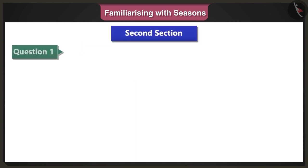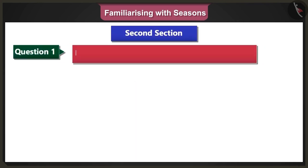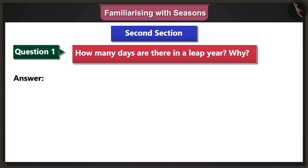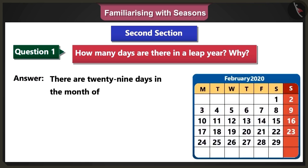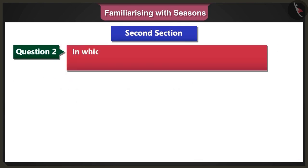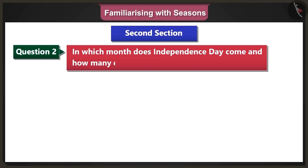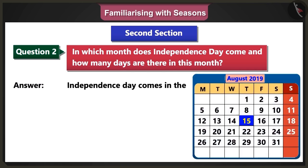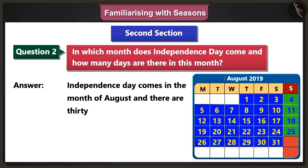First question of the second section: How many days are there in a leap year, and why? Answer: There are 29 days in the month of February in a leap year. Hence, there are 366 days in this year. Second question: In which month does Independence Day come, and how many days are there in this month? Answer: Independence Day comes in the month of August and there are 31 days in this month.